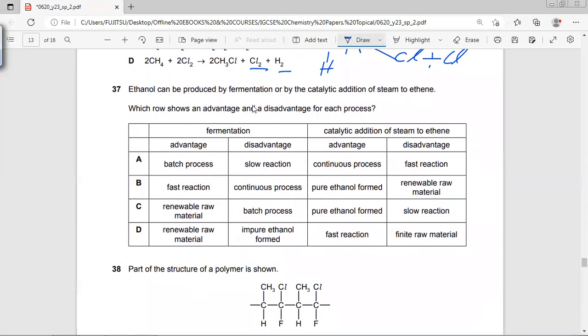Yes, to make ethanol we have industrial as well as fermentation process. But fermentation process gives us a mixture of products. It uses yeast and it's a batch process.